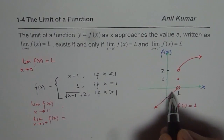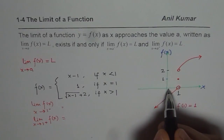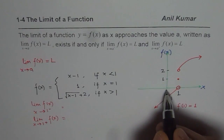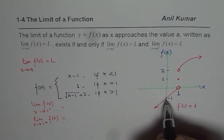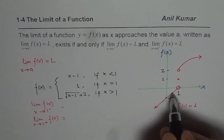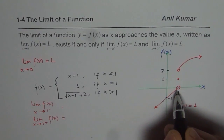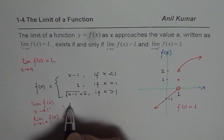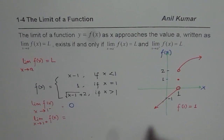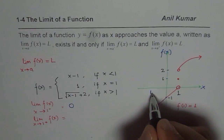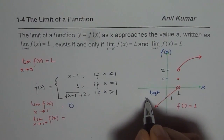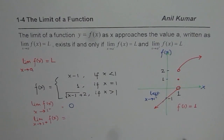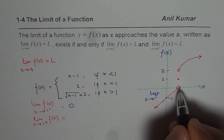As you approach 1 from the left side — for example, even if you are at 0 you are on this line — you are approaching a value of 0. So this left-hand limit is 0. When we say x is approaching 1 from the negative side, that means the left side, and you are approaching a value of 0.